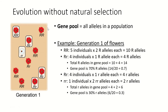Here's an example of a population of flowers. In the gene pool, we have two alleles for color: capital R, the dominant allele, is red; lowercase r, the recessive allele, is white. In this first generation of flowers, we can count how many of each allele are in the population by counting the individuals with each genotype.